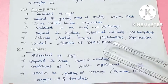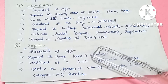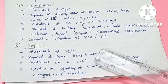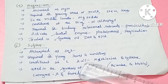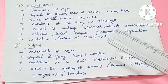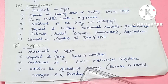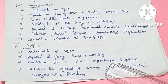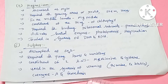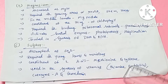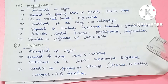Magnesium is also involved in the synthesis of DNA and RNA. The next element is sulfur. Sulfur is absorbed in the form of sulfate ions and is very important for young leaves and meristematic tissues.